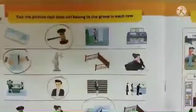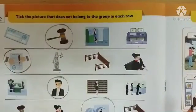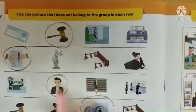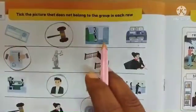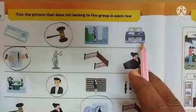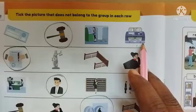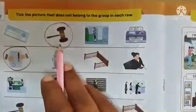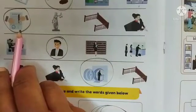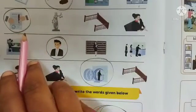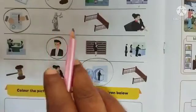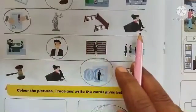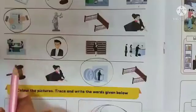Now, let us move on to page number 16, where we have an activity to tick the picture that does not belong to the group in each row. Check, ATM, and cash counting machine — these three belong to bank, but gavel belongs to court. So, circle the picture of gavel. A bank application belongs to bank, but lady of justice, witness stand, and judge belong to court. So, circle the first picture.